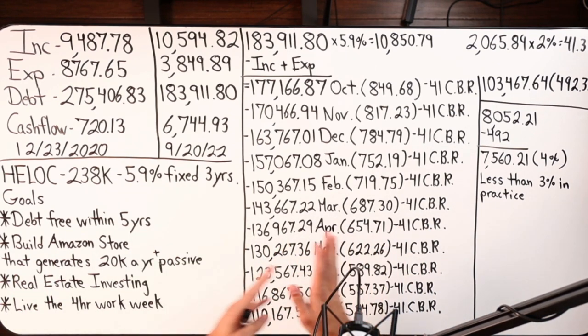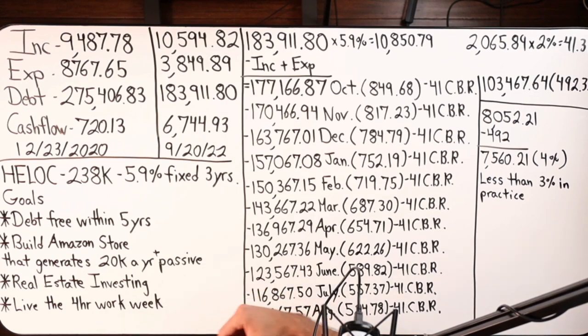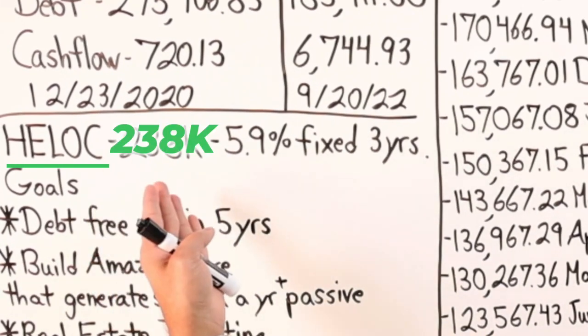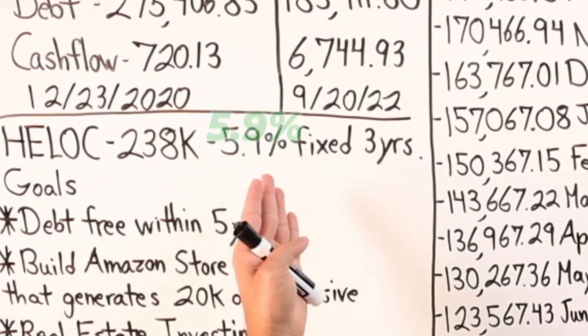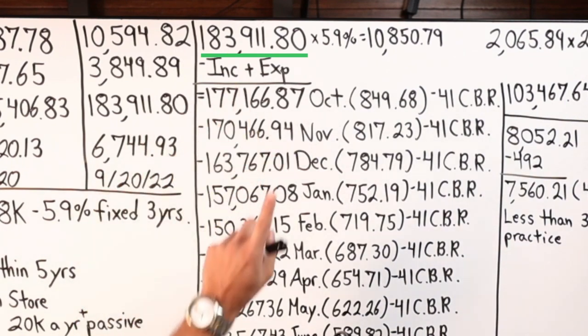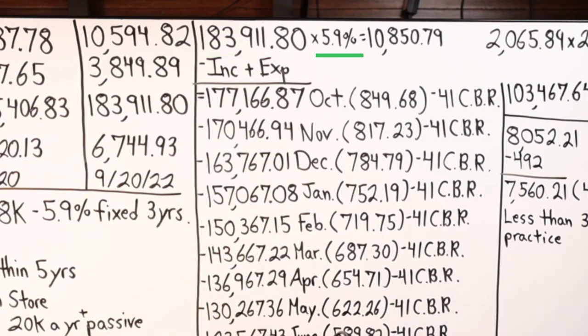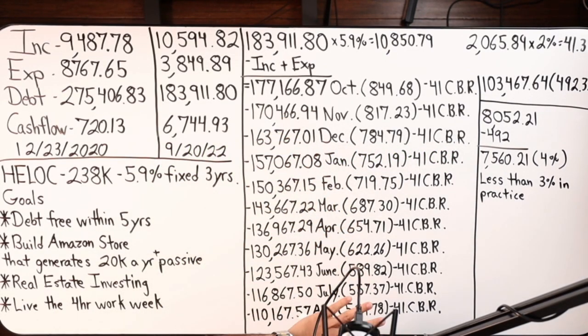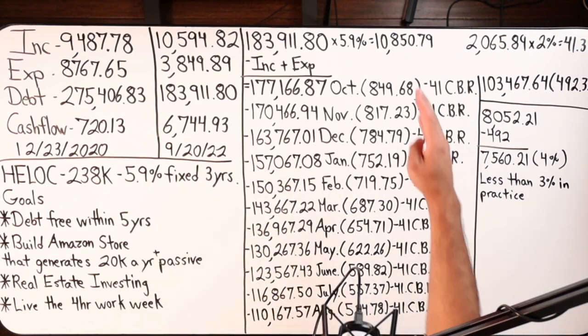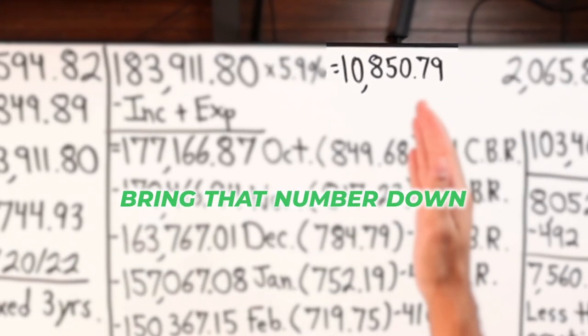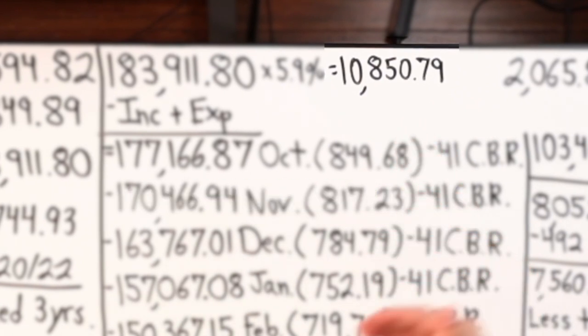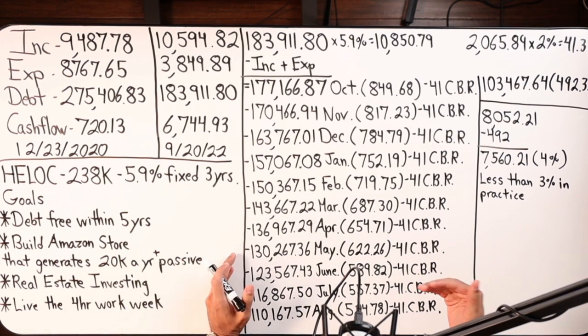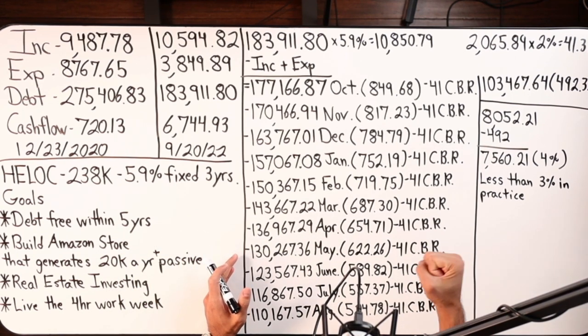So if you want to check that out, interesting way of lifestyle. All of what you see here, the strategies that we're implementing is going to complement these goals and help them reach them that much faster. First lien HELOC: $238,000 credit limit, 5.9% fixed interest rate for the next three years, current balance $183,911.80. You times that by 5.9%, you're going to get $10,850.79 in total interest if all I did was make interest only payments on the first lien HELOC without making any principal payments to the balance. That is what I would pay. Our goal in velocity banking is to bring that number down as low as humanly possible.